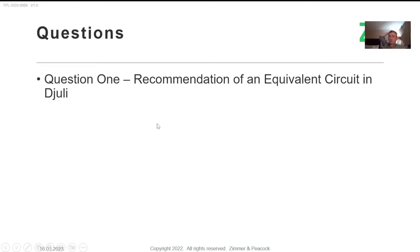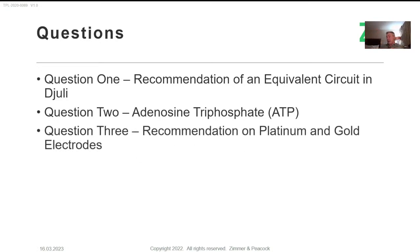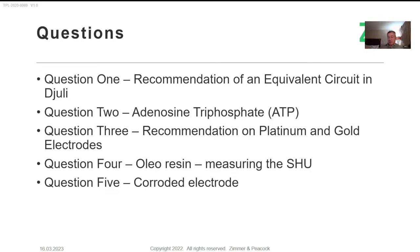So question number one, recommendation on equivalent circuit in Julie - Julie has the ability to look at your data, feed it to equivalent circuits from the literature, tell you which circuit's the best, and give you the reference so you can read the paper. ATP, adenosine triphosphate - we've got microbiome sensors for detection and screen printed format. I've recommended platinum and gold electrodes. Whether you can reuse them depends on what you do with them. We could reuse them if we're doing simple science like ferrocyanide oxidations. Oleo resins - these occur in the food industry, and we can measure the capsaicin in oleo resins from chilies. The corroded electrodes - it's a general note that most materials in life, if you want to stop corrosion or degradation, keep them cool, keep them dark, and keep them dry.